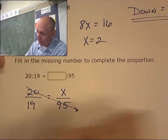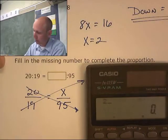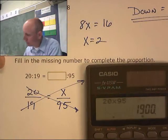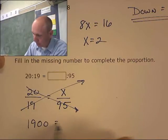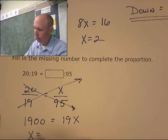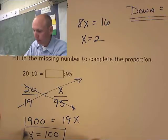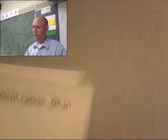But look, let's do down equals up. My down, 20 times 95. 1900. 1900 equals 19x. x has to be 100. Let's try another one.